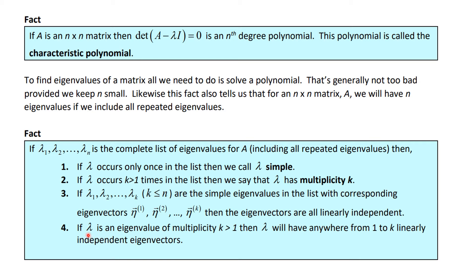This is a much more complicated situation, but if lambda is an eigenvalue multiplicity greater than one, then lambda can have anywhere from one to k linearly independent eigenvectors.